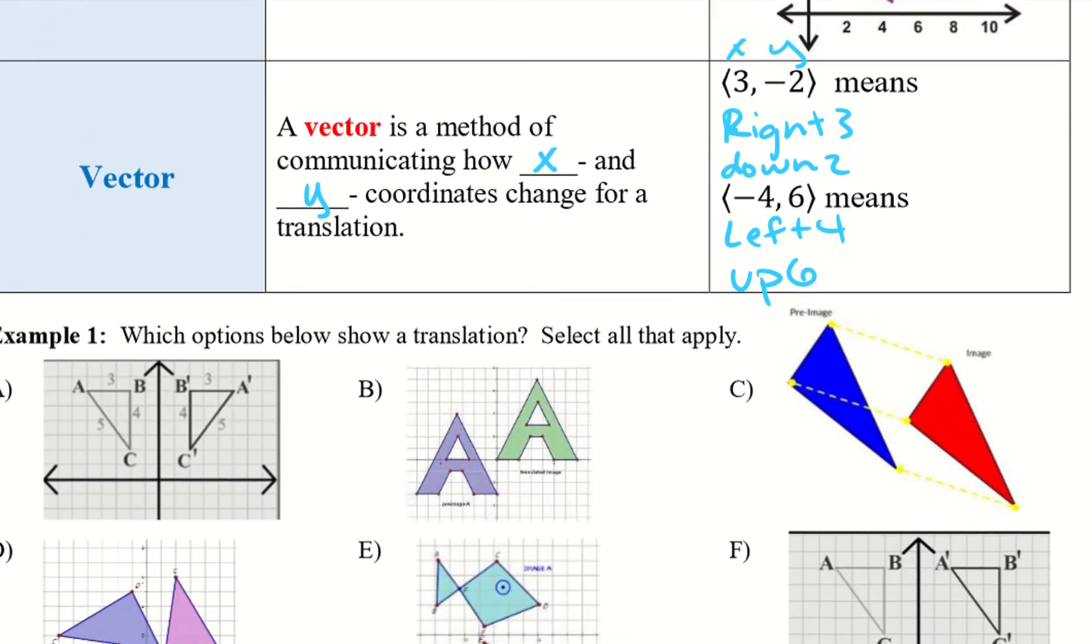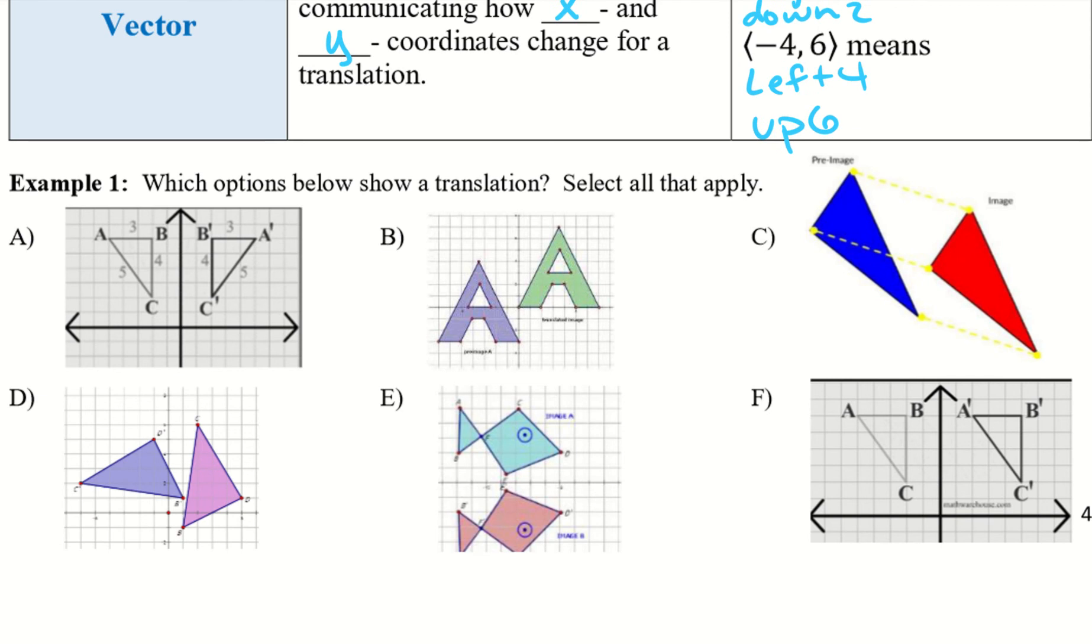Alright, so take a look at example 1 and see if you guys, I'll give you guys a couple seconds to figure out which ones are the translations. Alright, so I got B, C, and F. So if I take a look at A, it definitely goes up a little bit and then off to the right, if I just take a look at that top point. And all those points do the same thing. It goes up and to the right. C, it shows you where it's moving.